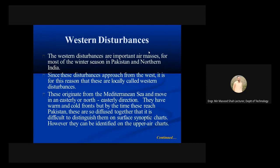Western disturbances originate from the Mediterranean Sea and move in an easterly or north-easterly direction. They have warm and cool fronts, but by the time they reach Pakistan, these are so diffused together that it is difficult to distinguish them on surface synoptic charts.